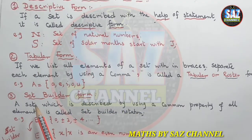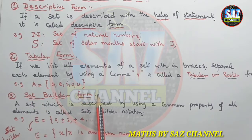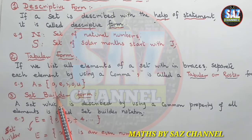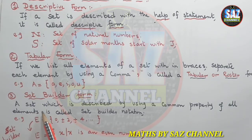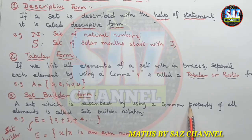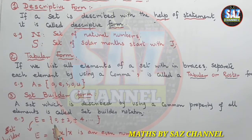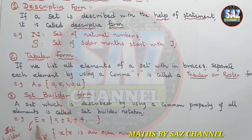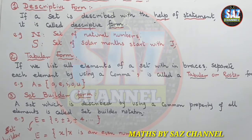The third method of describing a set is the set builder notation. In set builder notation, a set is described by using the common property of all its elements. For example, I have a set of even numbers: E = {0, ±2, ±4, ...}. Instead of writing this in tabular form, I can choose a general element x, and write x such that x is an even number. In this way, I have expressed the same message in the form of set builder notation.